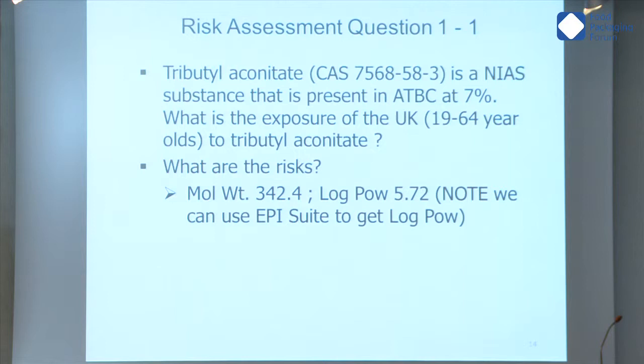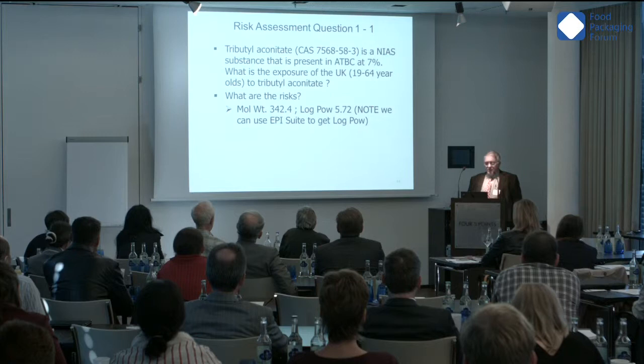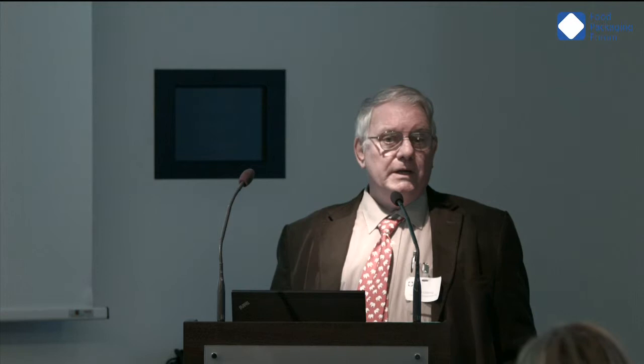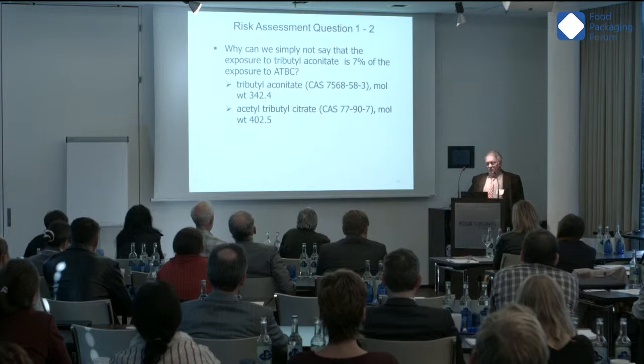Let's look at tributyl aconitate. It's a NIAS present in ATBC at 7%. ATBC is used in inks. What is the exposure? We've taken the UK 19 to 64 year olds. What are the risks? We know its molecular weight and we can calculate its log POW. Why can't we just say it's 7% of ATBC, therefore it should be 7% of the exposure to ATBC? We'll see in a moment.